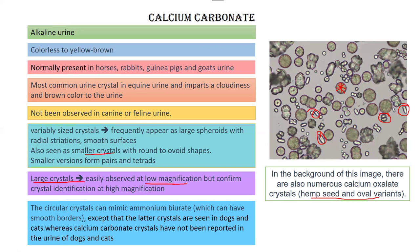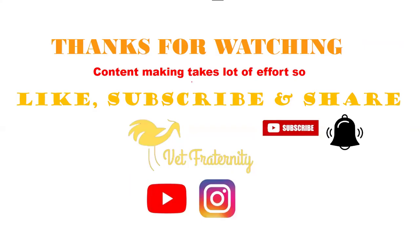To confirm the exact crystal identity you must use high magnification. The circular calcium carbonate crystals can mimic ammonium biurate, which also has smooth borders. The key difference is that ammonium biurate is seen in dogs and cats, while calcium carbonate crystals are not found in cat and dog urine. Ammonium biurate can also be present in the same species as calcium carbonate, but calcium carbonate is not present in cats and dogs. We will cover ammonium biurate crystals in the next lecture.